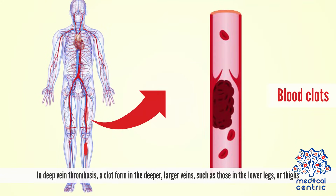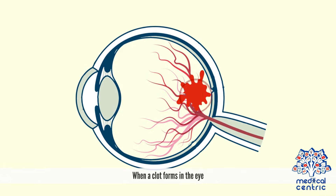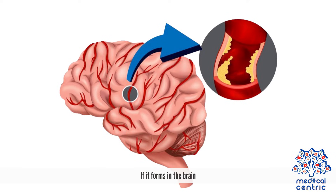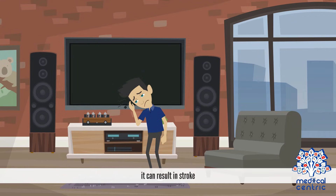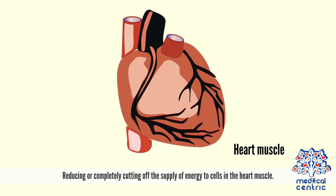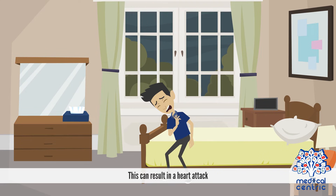In deep vein thrombosis, a clot forms in the deeper, larger veins, such as those in the lower legs or thighs. When a clot forms in the eye, it can result in blindness. If it forms in the brain, it can result in stroke. A clot that forms in one or more arteries can block blood flow to part of the heart muscle, reducing or completely cutting off the energy supply to heart muscle cells, which can result in a heart attack.